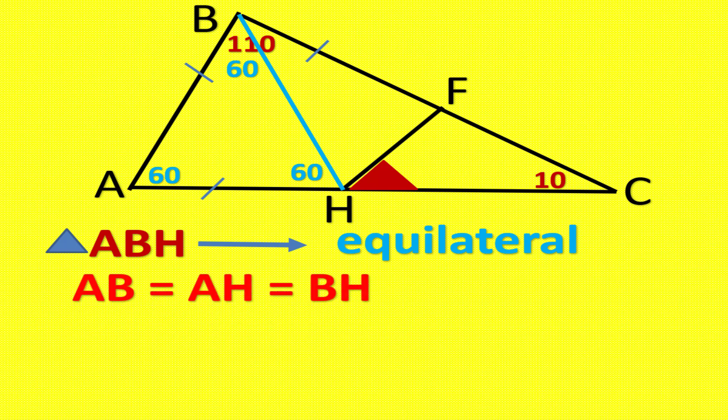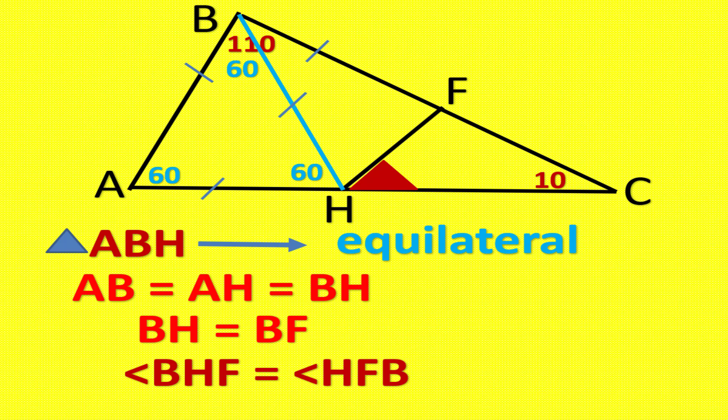Triangle ABH is equilateral. Angle ABH equals AH equals BH. BH equals BF. Angle BHF equals angle HFB.